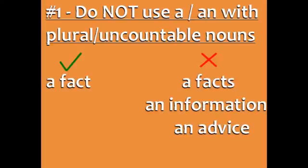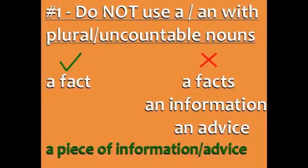For example, 'a fact' is correct because 'fact' is singular, but you can't say 'a facts' because 'facts' is plural. 'An information' and 'an advice' are also incorrect because information and advice are uncountable nouns. However, you can say 'a piece of information' or 'a piece of advice.'